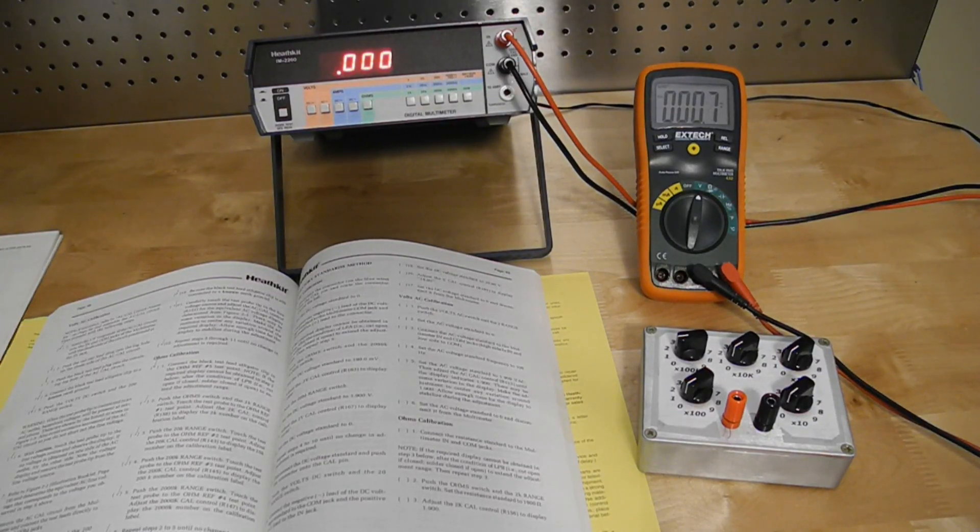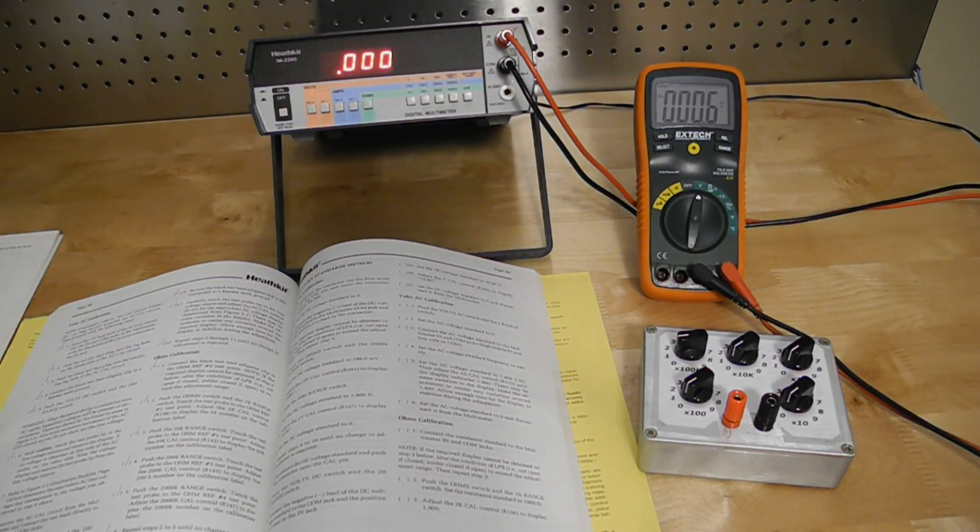Alternatively, you can calibrate using laboratory voltage and resistance standards if available. I used a third method which was to use power supplies and resistance boxes, measuring them with an accurate DMM and then adjusting the IM2260 for the same reading. You adjust a number of trimmers for the correct reading for DC volts, AC volts and ohms ranges.